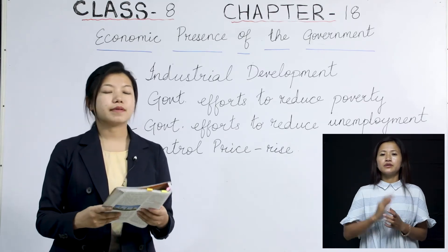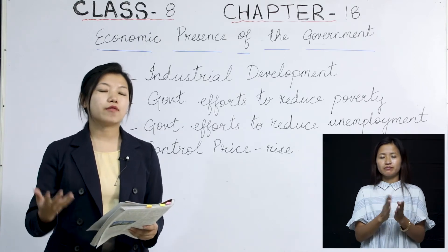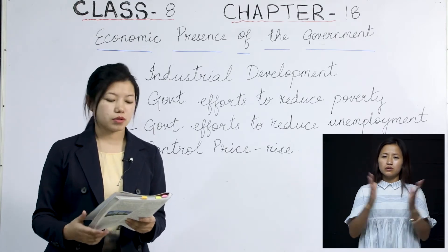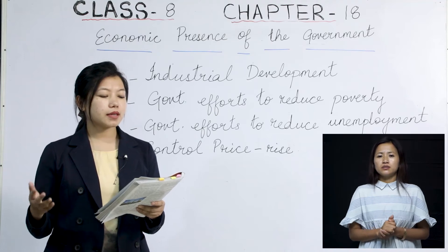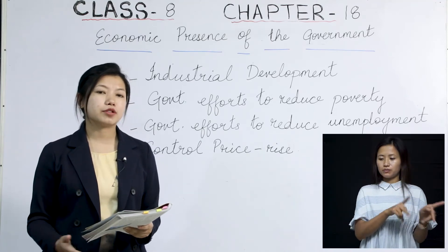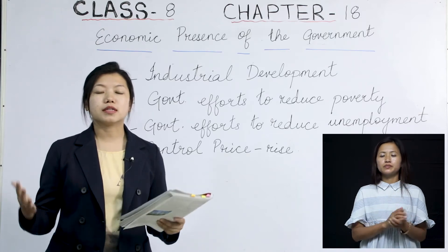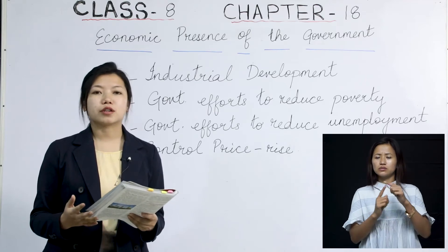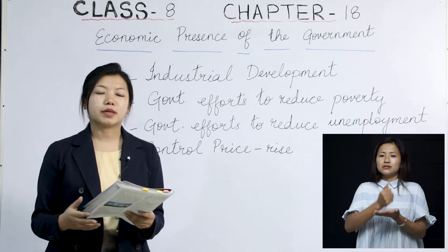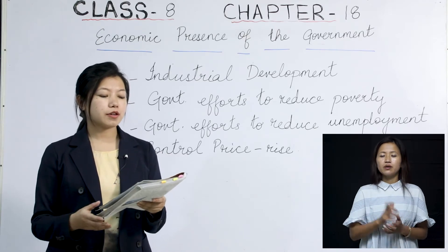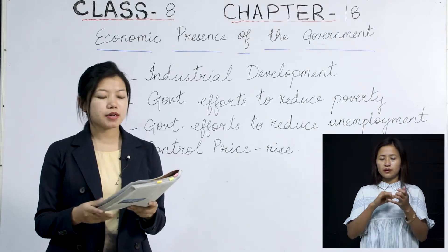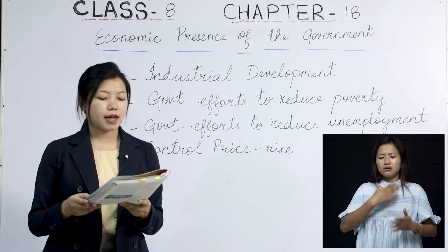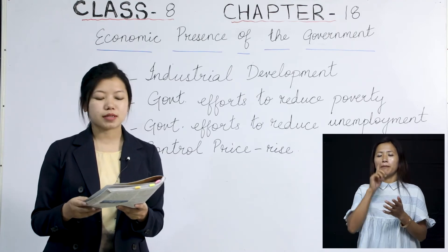The fifth effort is family planning, focusing on controlling population explosion. The sixth is the five-year plans, where all top leaders of the country discuss and decide for the betterment of the country. The seventh is the food security scheme, which has gone a long way in helping people who remain hungry, undernourished, and malnourished due to low purchasing power. There are about four lakh fair price shops that supply goods at very cheap rates.